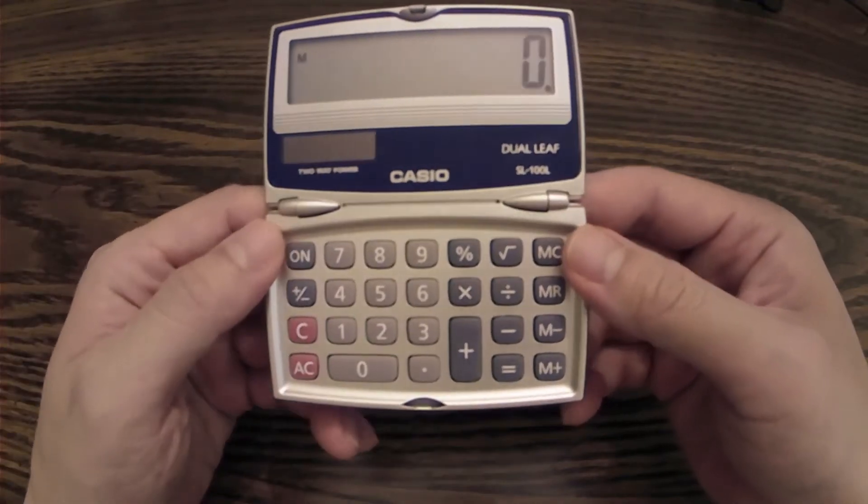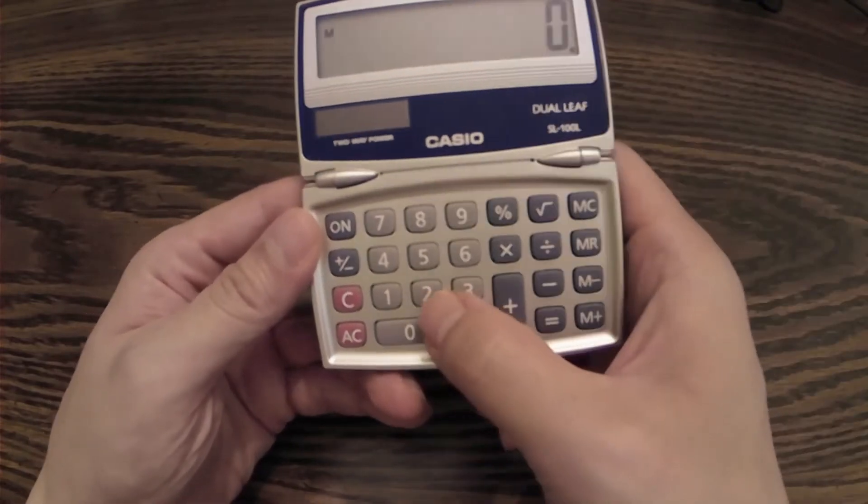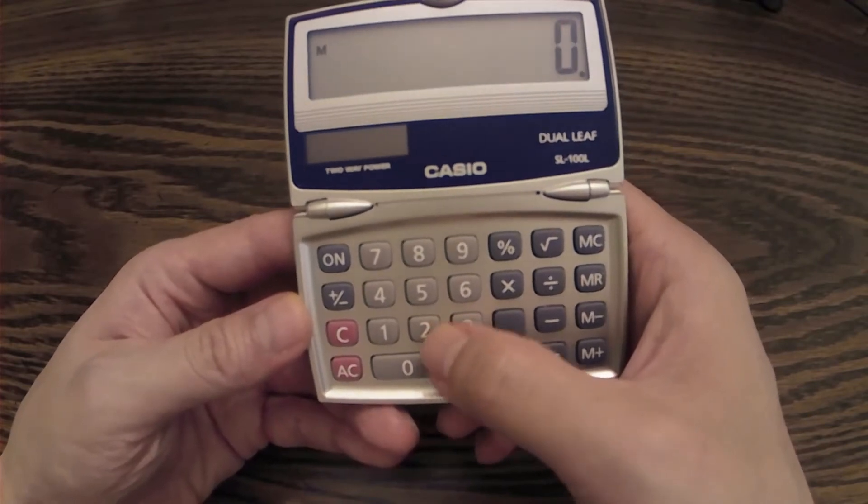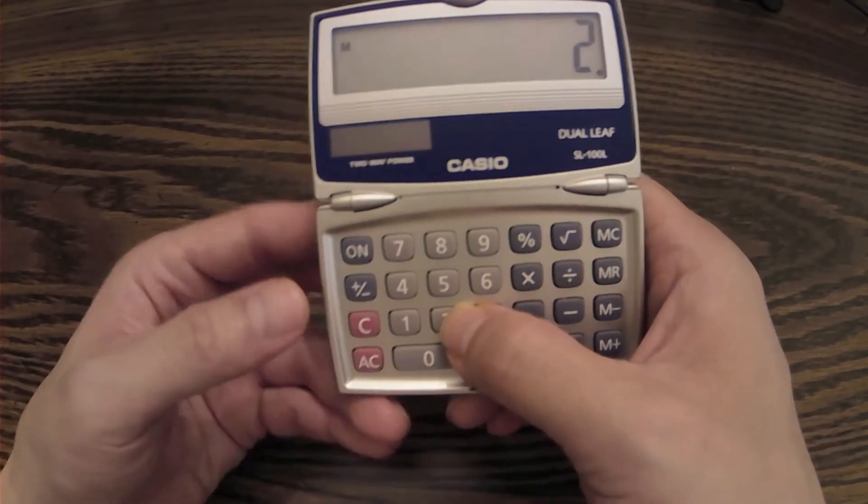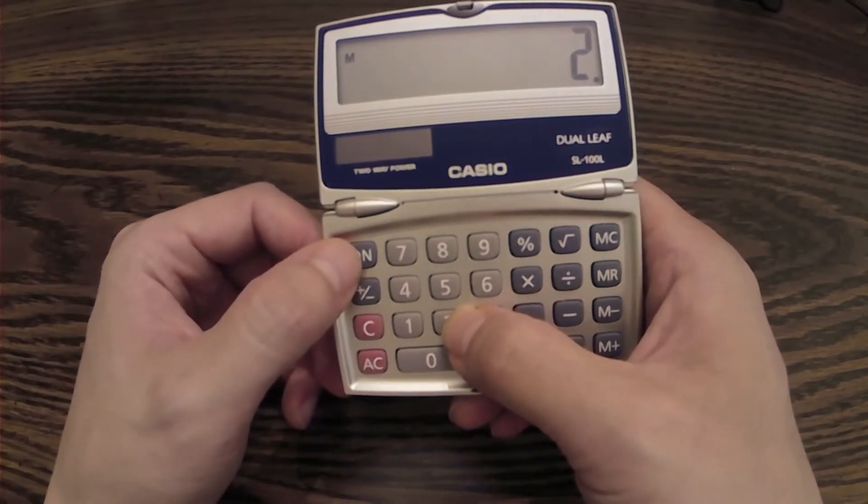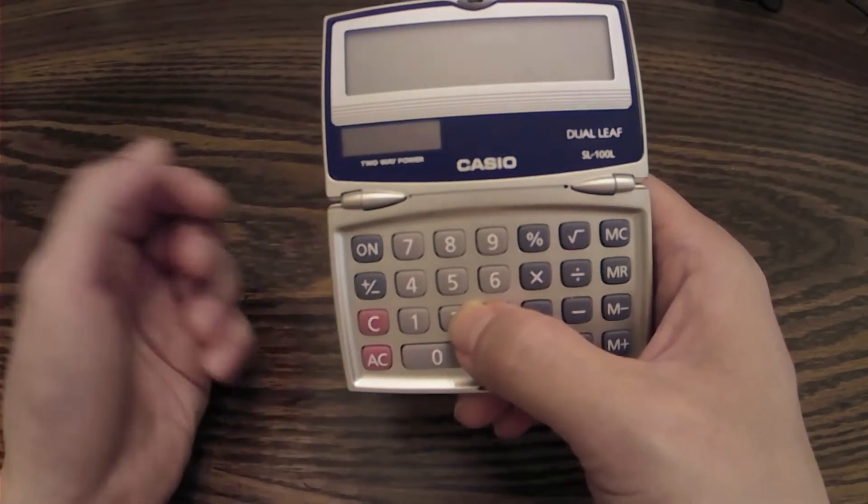If I want to shut it off, what you do is press the two and the three buttons together simultaneously. Hold those two buttons down, and then you could press either the ON or the AC button to turn it off. Press down and it's off.